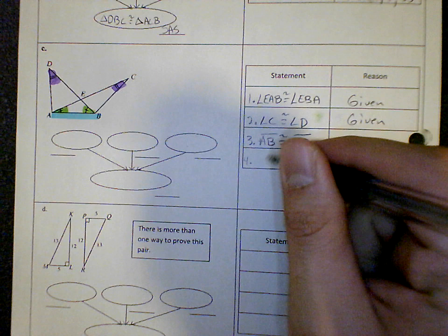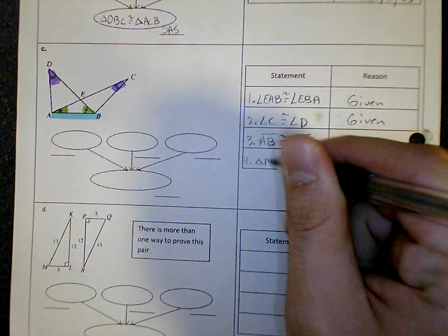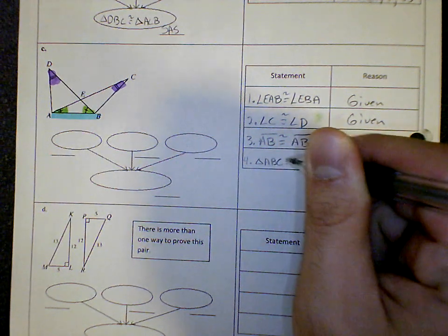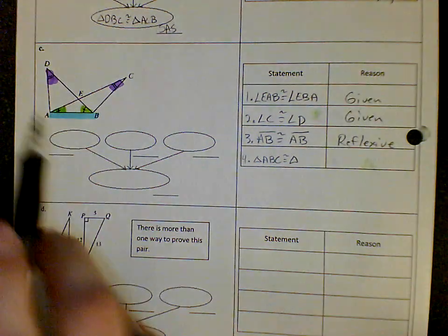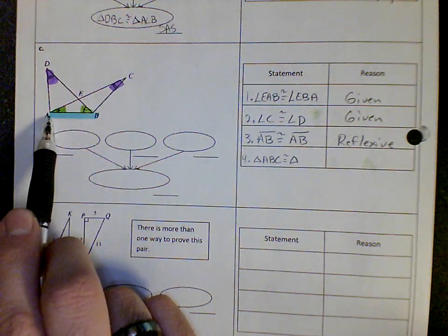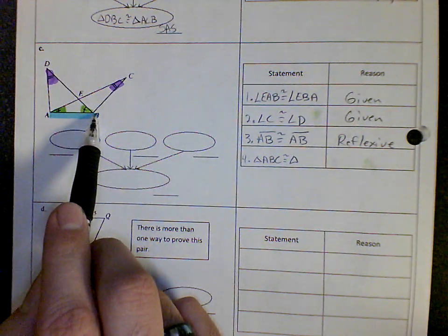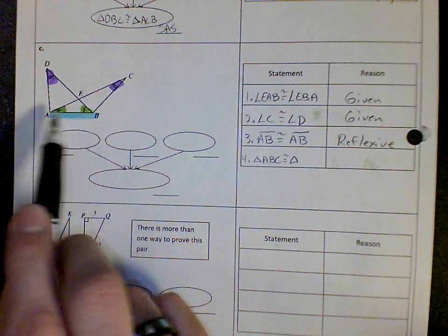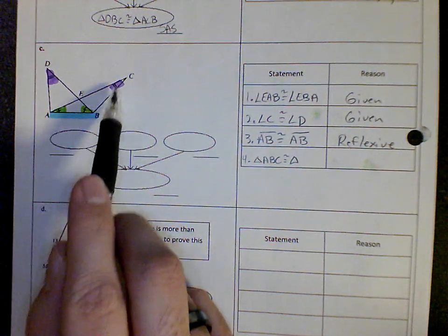So I know that has to be the third step of my proof. And the fourth step. So let's do triangle ABC is congruent to triangle—notice I did green, blue, purple.